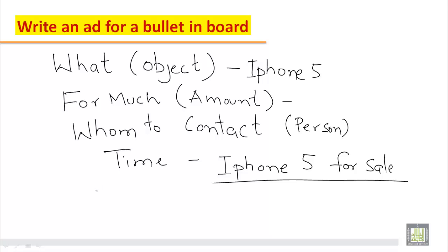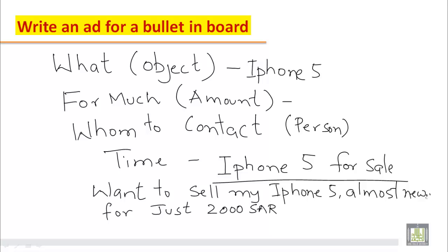So you can start with want to sell my iPhone 5 almost new for just 2,000 Saudi real. You can make this as comma for just 2,000 Saudi real. Those interested call Atif. Suppose your name is Atif. From 4 to 9 p.m. And the last important thing is your mobile number. My mobile number is 059 blah blah. So this is how you will write an ad.